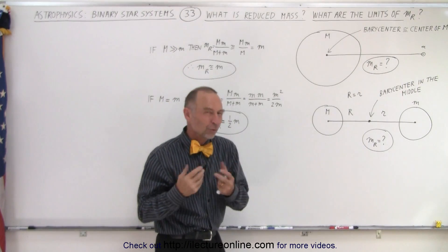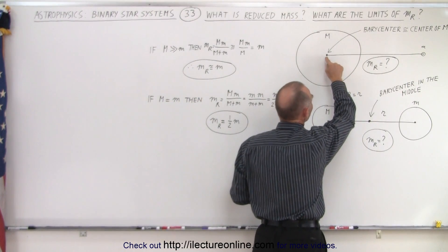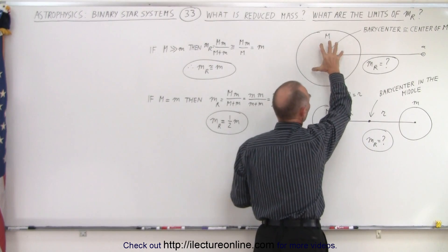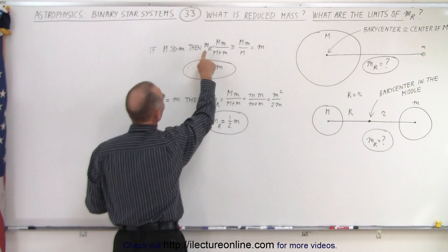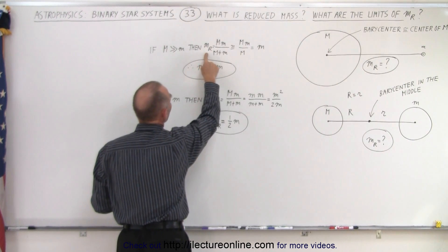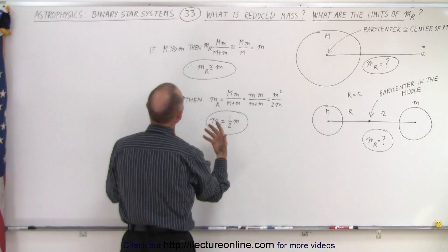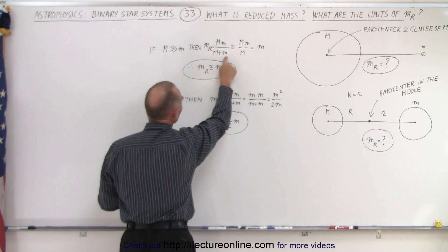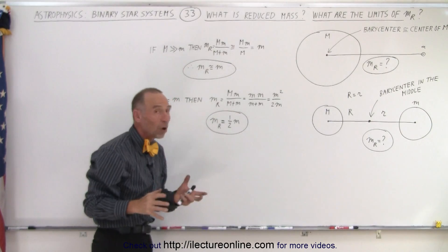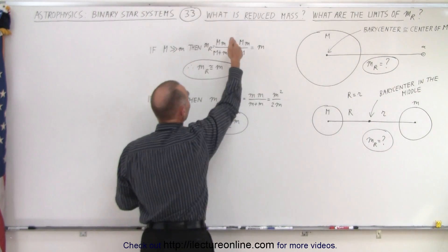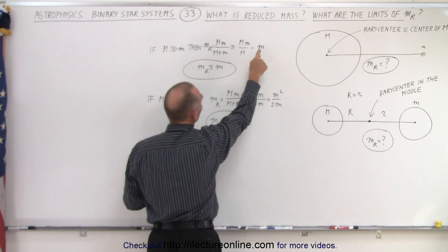When we have a situation like that, the barycenter is actually very close to where the center of mass of the large object is. And if that's the case, we see that the reduced mass can be written as the product over the sum — that will never change. But notice that M plus m is essentially the same as M, since M is much, much larger than small m. Then you can see that the M's cancel out and the reduced mass essentially becomes equal to the mass of the small object.